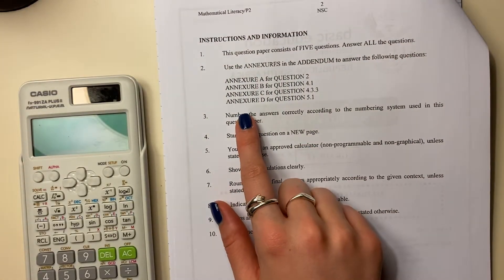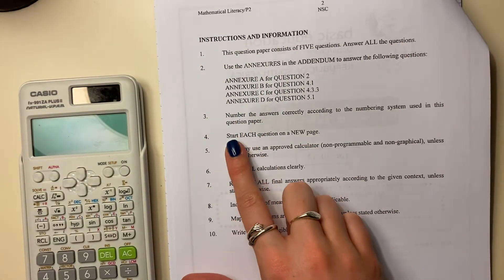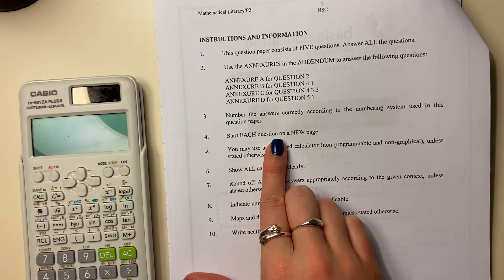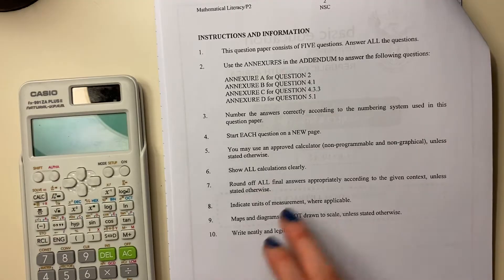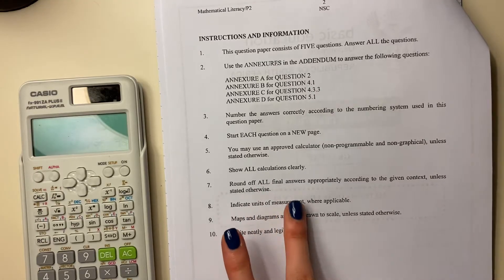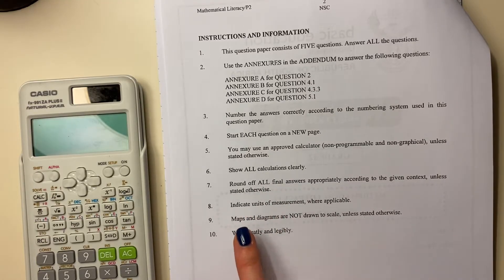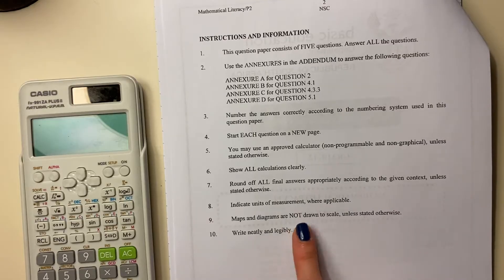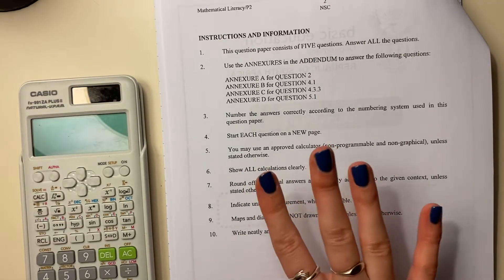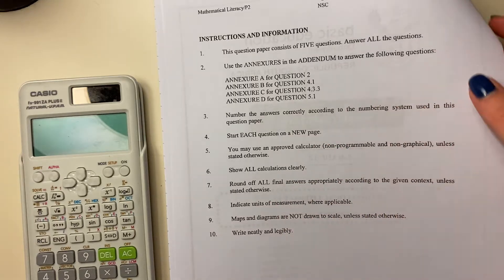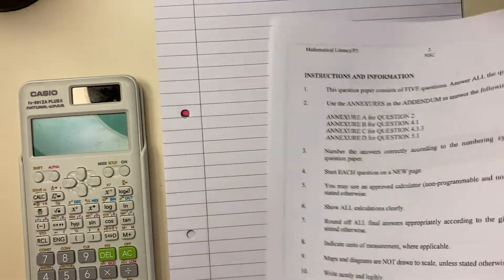Make sure that you have your annexes, I have mine next to me here. Start each new question on a new page because you have different markers for different questions. Show all your calculations, indicate units, very important. You can lose marks if you don't do that. And then obviously maps and diagrams are not drawn to scale. Then round off all final answers. So don't round off while you're working, round off at the end. Let's jump into the first question.